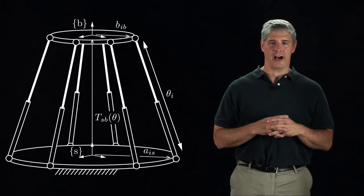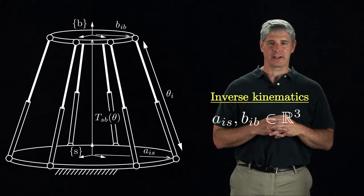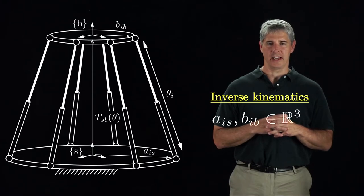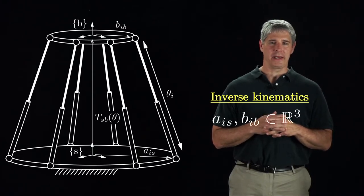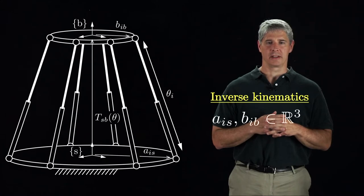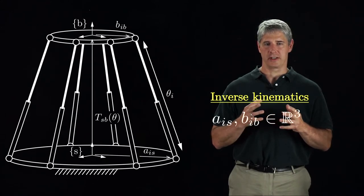For the i-th leg, theta i is the length of the leg. A i s is the vector from the S frame to leg i's joint at the base, measured in the S frame, and B i b is the vector from the B frame to the top joint of leg i, measured in the B frame.